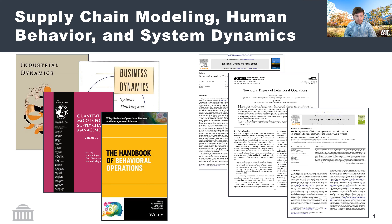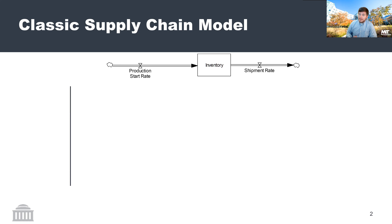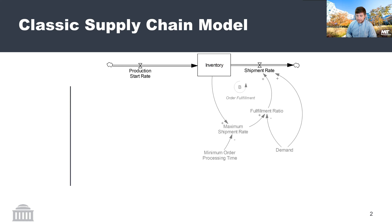Behavioral operations as an emerging subfield within the OM field is really taking this idea of human decision making and choice and applying it to operations management and supply chain modeling. When we talk about supply chain models, we can think of a classic supply chain model: inventory accruing, being added to by some sort of production start rate and being diminished by some sort of shipment rate to an end customer based upon some concept of demand, which in turn feeds back into this production start rate.